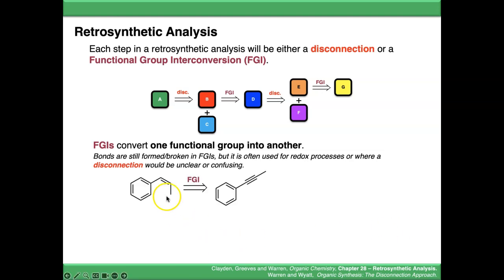For example, here, this functional group interconversion, we're basically conceptually disconnecting an alkene back to an alkyne. If we were to draw this as a disconnection, it looks a bit weird, because we've got two hydrogens in here. These are the hydrogens we're adding in this reaction. This is the reduction of an alkyne to an alkene.